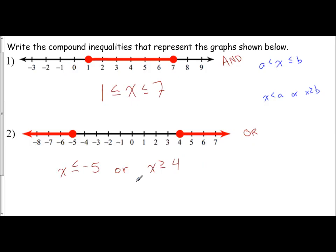Determine which one it is by the characteristics of the solution space graph. Is the solution space between or is it outside? Then determine, is it closed circle or open circle? To use either less than or less than or equal to, or greater than or greater than or equal to, and put your variable in the appropriate spots. This is how you write the compound inequalities from a given graph.